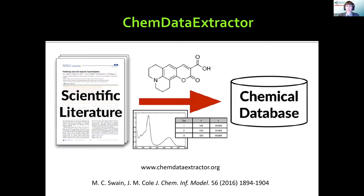Let's see how that works under the hood. The input to ChemDataExtractor is your scientific literature — literally thousands of documents — and it will find the chemical information, whether that's a chemical structure or a formula in text, and it will also find the property you ask of it. You have to specify what you want, and it will then collate that chemical and property information and put it into a chemical database automatically for you.